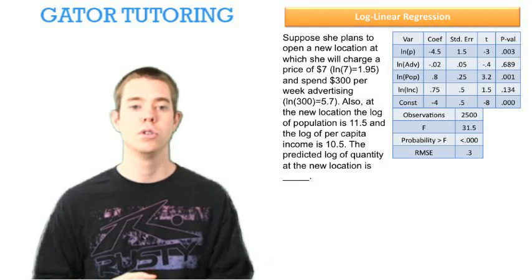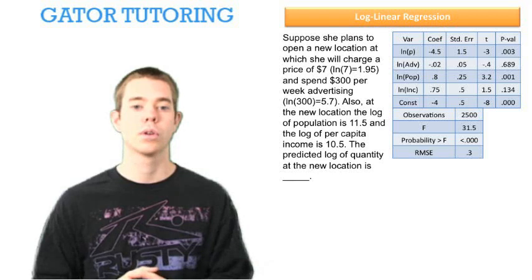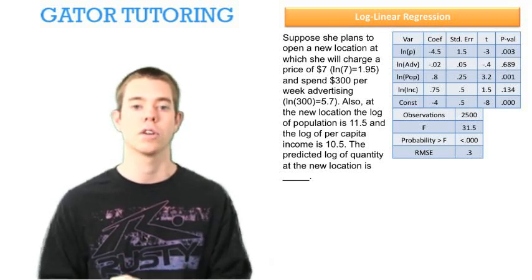Suppose she plans to open a new location at which she will charge a price of $7, so the ln(7) is 1.95, and spend $300 per week advertising, so the ln(300) is 5.7. Also, at the new location the log of population is 11.5 and the log of per capita income is 10.5. They've just given that to us in the log form already.